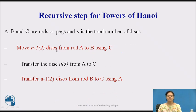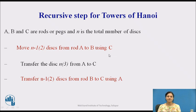Now we can define an algorithm. Given rods or towers A, B, C and n total disks: first, move n minus 1 disks from A to B using C as the auxiliary tower. Then transfer the largest disk, disk n, from A to C. Finally, move the remaining n minus 1 disks from B to C using A as the auxiliary tower.